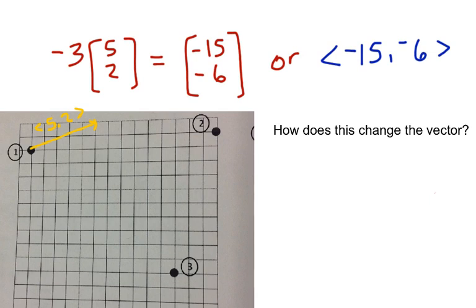So turning that around, that would be the vector negative 15, negative 6. So the question is, how does that scalar multiplication change the vector? If you think about what we did on the last one, what do you think it's going to do? You suspect you know what the 3 is going to do, what does the negative do, think about what we learned last time.